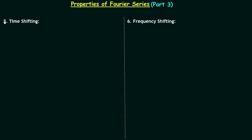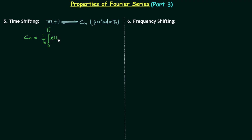Let's move to the fifth property, which is the time shifting property. Like previous cases, we will consider a signal x(t), and let's say its complex exponential Fourier coefficient is equal to cn, its time period is equal to t0. We know the formula to calculate cn: it is equal to 1 over t0, integration from 0 to t0 of x(t) multiplied by e^(-jnω₀t) dt.